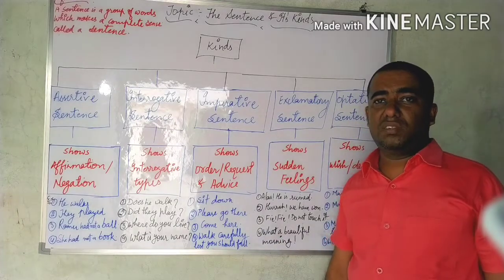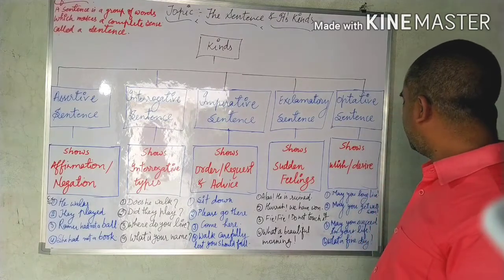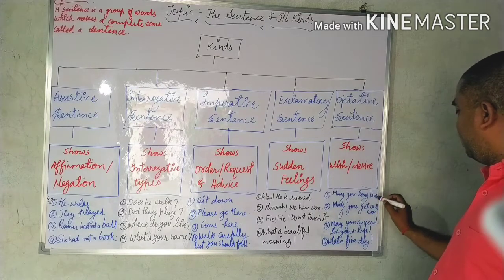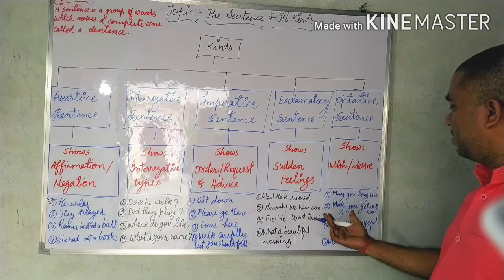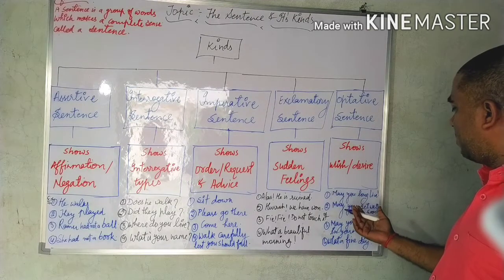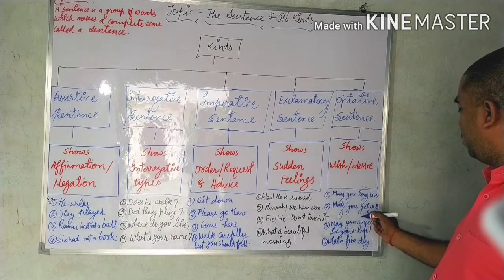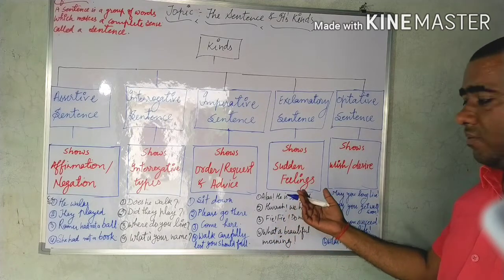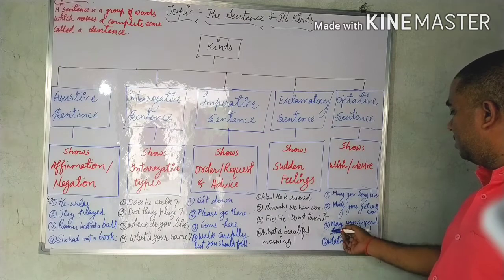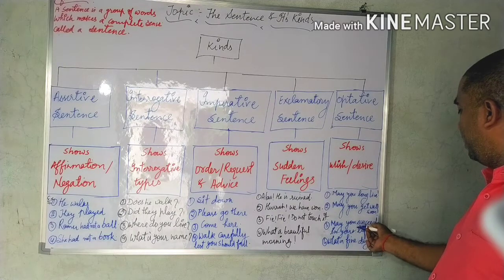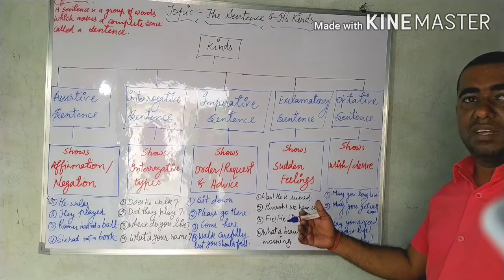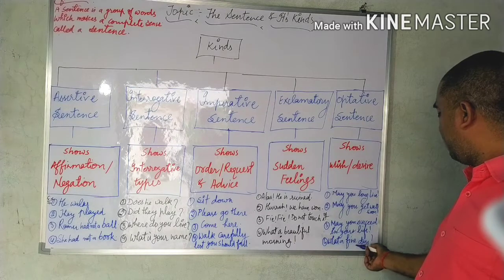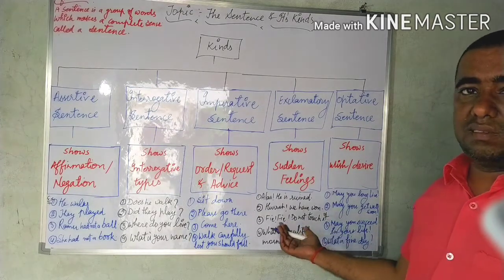The fifth kind is the optative sentence. It shows wish, desire, etc. Examples: 'May you long live' — when we wish someone well. 'May you get well soon' — when someone is ill and we pray for their recovery. 'May you succeed in your life' — when we give someone blessings, we use these types of sentences.